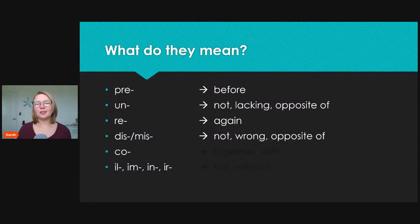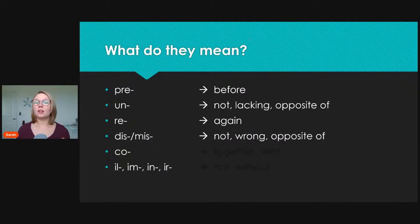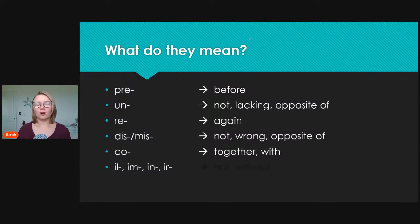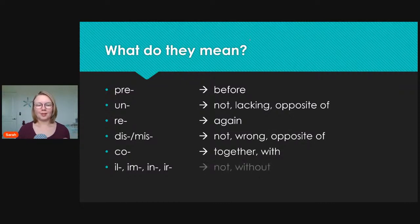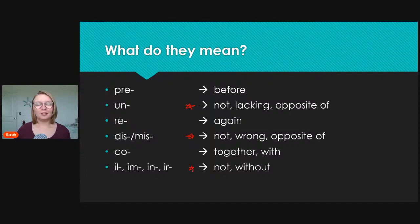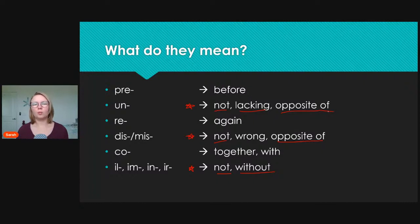There are many prefixes and suffixes with the same or similar meanings. Next we have the prefix 'co,' which means together or with. And last for our most common prefixes, we have 'il,' 'im,' 'in,' and 'ir,' which mean not or without. We can see that 'un,' 'dis,' 'mis,' and these four all similarly mean not, lacking, or opposite of — but we can't always use them the same way with every word.